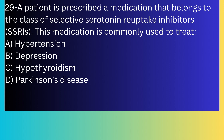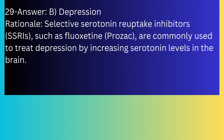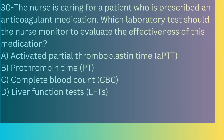Question number twenty-nine: A patient is prescribed a medication that belongs to the class of selective serotonin reuptake inhibitors (SSRIs). This medication is commonly used to treat: A) Hypertension, B) Depression, C) Hypothyroidism, D) Parkinson's disease. The answer is B, depression. SSRIs such as fluoxetine (Prozac) are commonly used to treat depression by increasing serotonin levels in the brain.